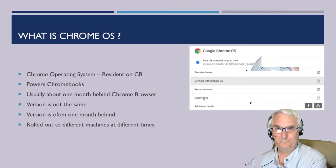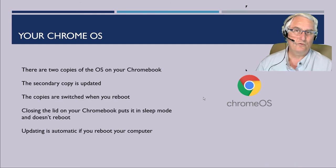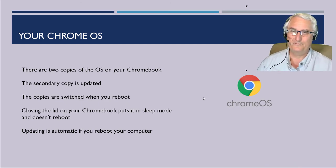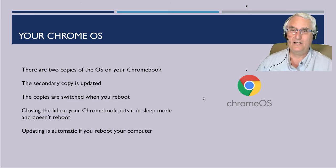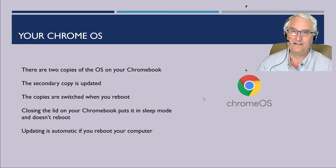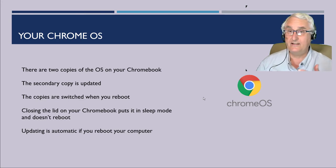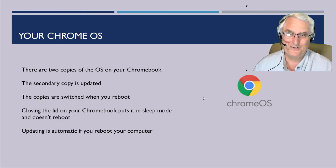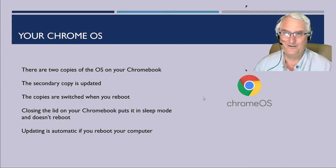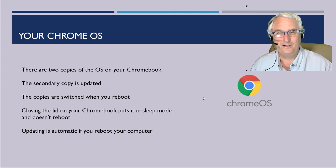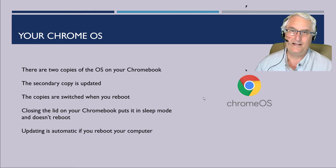The thing to remember about your Chrome OS is that there are two copies on your Chromebook. There's a secondary copy, and that's the copy that is updated on a regular basis — updates are constantly coming in to the secondary copy. The nice thing about that is it's never going to bother you, because you're using the primary copy. But when you're not looking, they'll switch the copies for you, and then you'll get the one with all the latest updates.